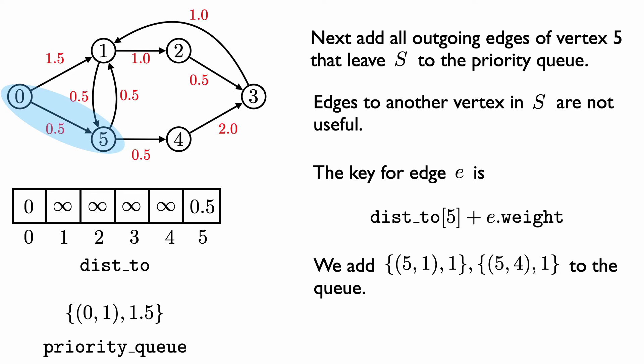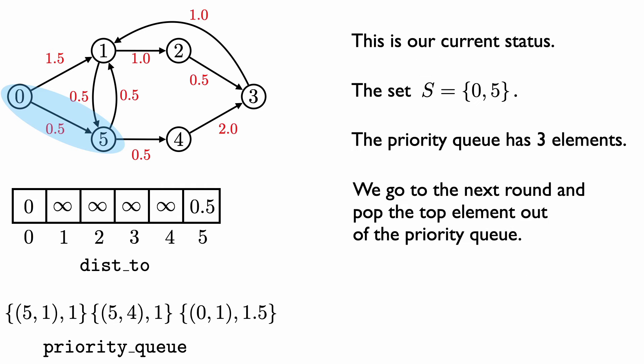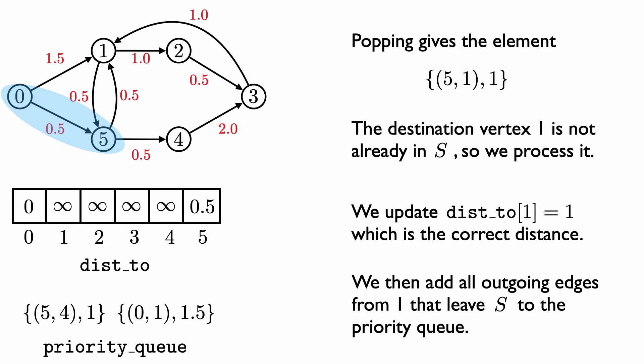We add the edge from vertex 5 to vertex 1 with key value 1, and the edge from vertex 5 to vertex 4 also with key value 1. So our set S now contains vertices 0 and 5, and the priority queue has three edges with their associated key values. In the next round, we pop the top element: the edge from vertex 5 to vertex 1 with key value 1. Vertex 1 is not already in S, so we process it — we add vertex 1 to S and update its dist2 value to be 1.